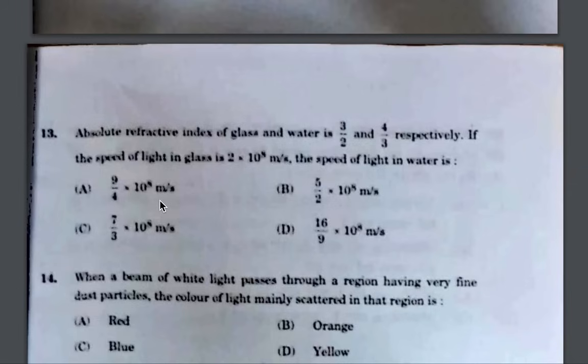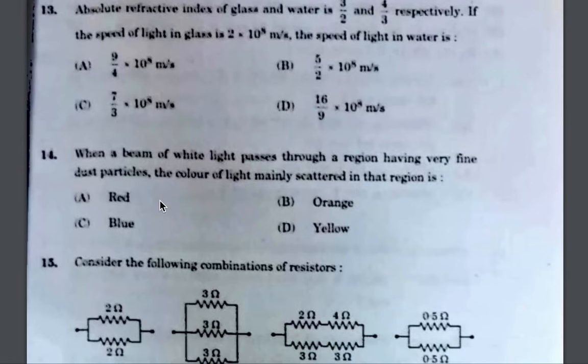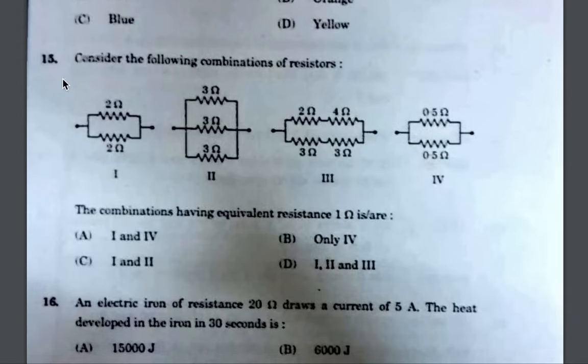I have put detailed explanations in set 31/4/1 and related sets, so I am not repeating everything here. When a beam of white light passes through a region having very fine dust particles, the color of light mainly scattered is blue.